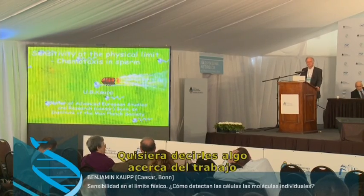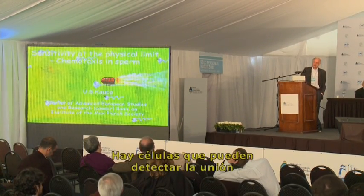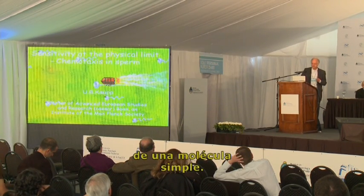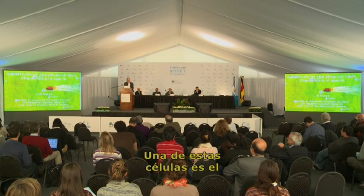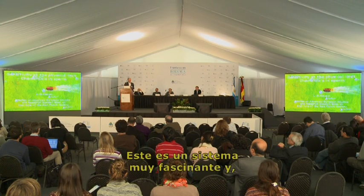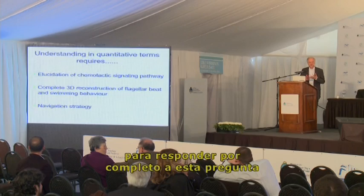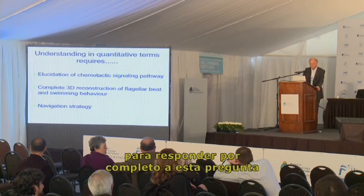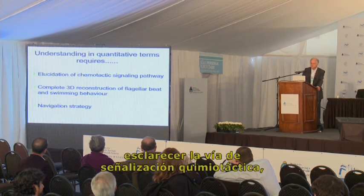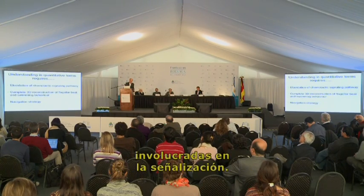I would like to tell you something about working at the physical limit. There are cells that can detect the binding of a single molecule, and one of these cells are sperm — sea urchin sperm. This is a very fascinating system. To answer this question completely in quantitative terms, you have to elucidate the chemotactic signaling pathway and know all the molecules involved in signaling.